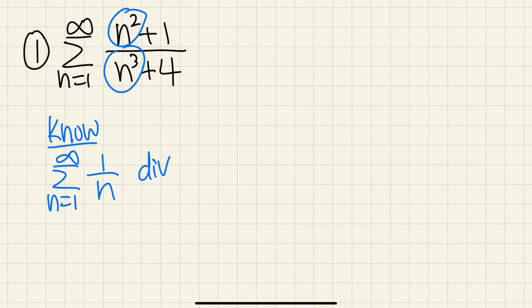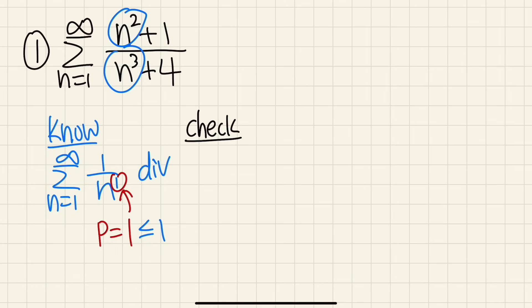You can also look at this as the p-series — this is n to the first power, so p is equal to 1. Make sure you indicate that p is less than or equal to 1 for the p-series to diverge. Now we are going to make a comparison. We have two choices: either the direct comparison test using an inequality, but because we have the plus 1 and plus 4, the inequality is not going to work out so well.